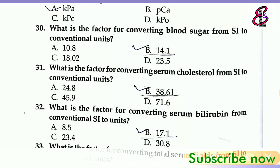Next question: What is the factor for converting blood sugar from SI to conventional units? Answer is 14.1, 14.1.